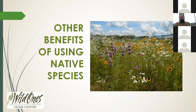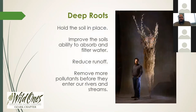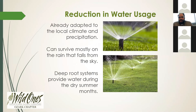What are some other benefits of using native species? Many of our native species, especially our prairie species, have very deep root systems that are great for holding the soil in place. This improves the soil's ability to absorb and filter stormwater, which has the effect of reducing runoff, erosion, and can remove more pollutants before they enter our rivers and streams. Before humans arrived, nobody was watering the forest or the fields.